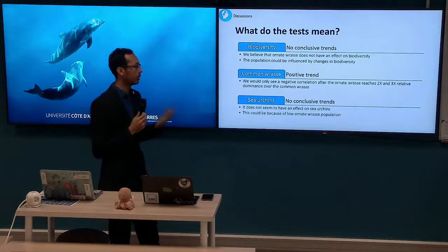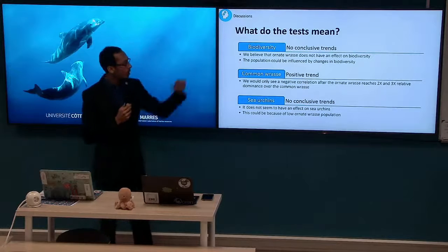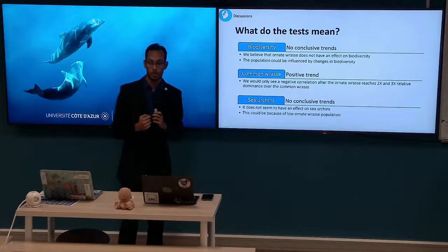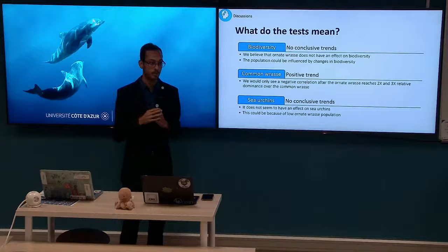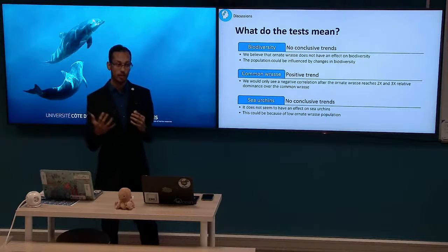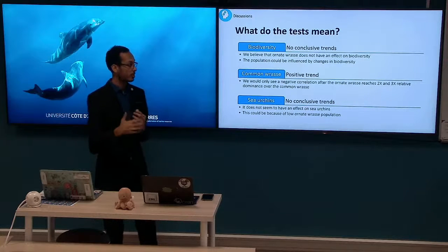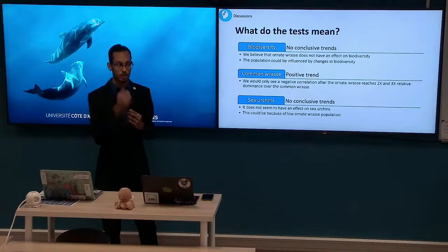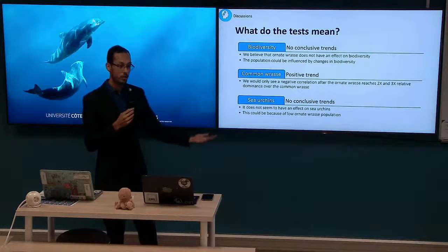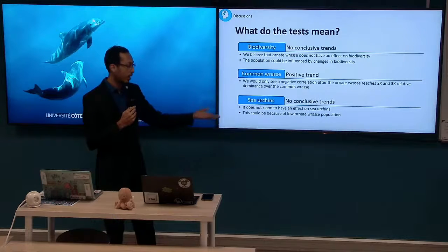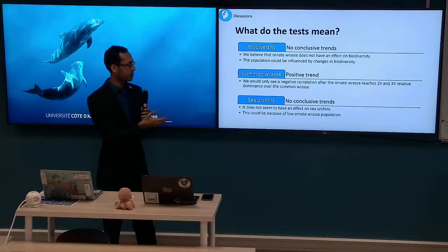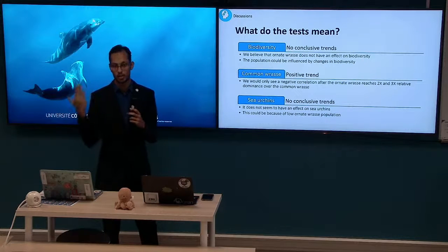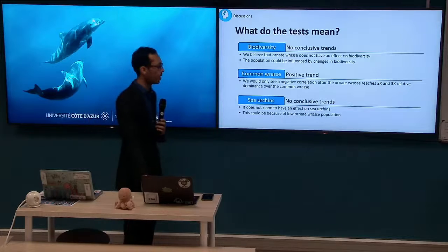Breaking down what these tests mean: we saw no conclusive trend between the Ornate Wrasse and biodiversity within the Lerins Islands; however, the data suggested a positive correlation. We believe this is because the Ornate Wrasse population is affected by local ecosystem health, as measured through biodiversity. As biodiversity and ecosystem functionality increase, we expect to see a rise in Ornate Wrasse. We speculate the relationship is not inverse — that a rise in Ornate Wrasse does not cause a rise in biodiversity.